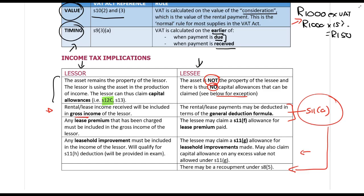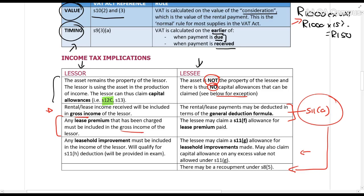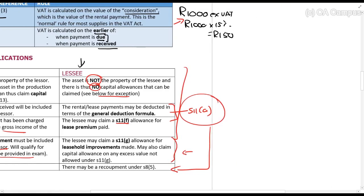If a lease premium is payable, the lease premium gets included in the gross income of the lessor, and the lessee can claim a section 11f allowance for it. A leasehold improvement will be included in the gross income of the lessor as a special inclusion in terms of the gross income definition — same as the lease premium — and will qualify for a section 11h deduction for the lessee. These will be provided to you in the exam. All of these are just recaps of things you've studied before.